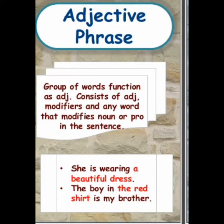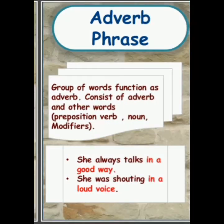Let's have a look at the adjective phrase. An adjective plus other modifiers performs the work of an adjective in a sentence. For example, "she is wearing a beautiful dress" and "the boy in the red shirt is my brother."